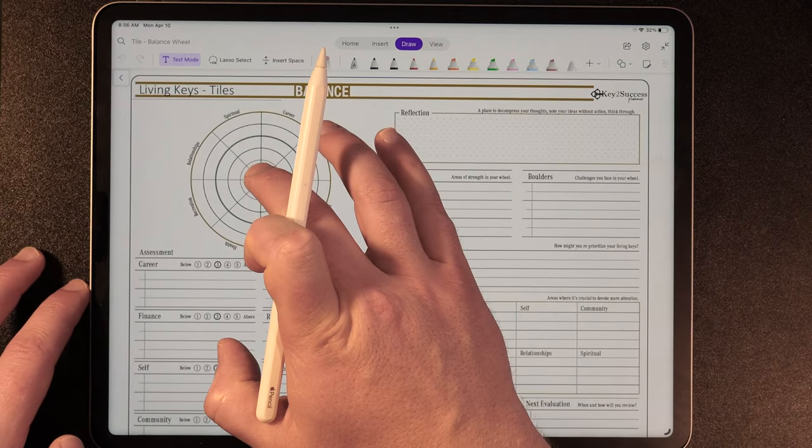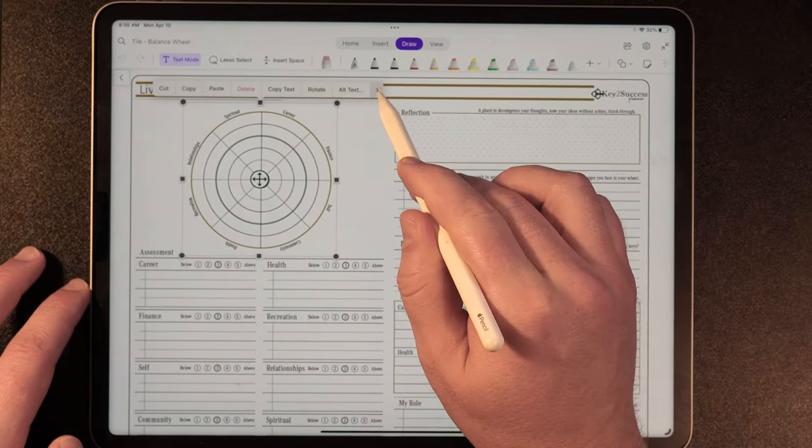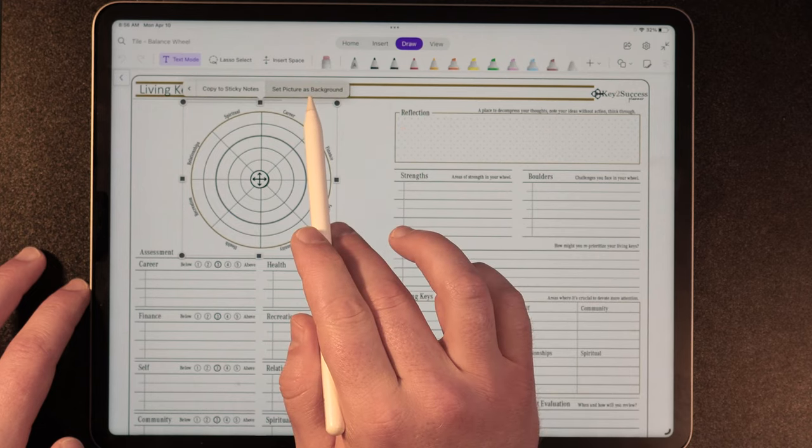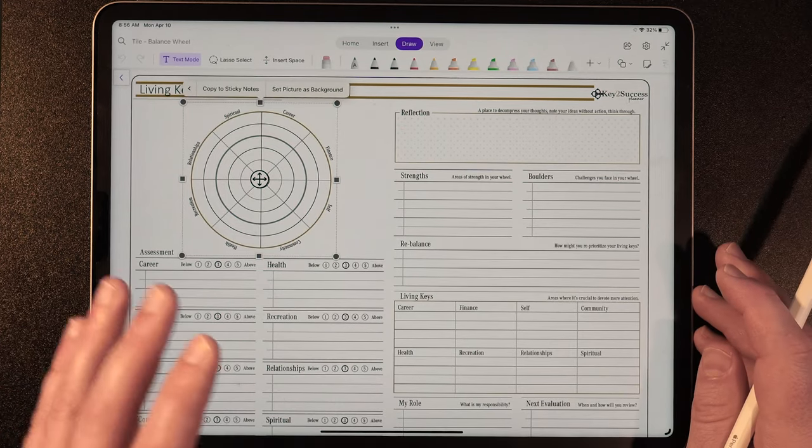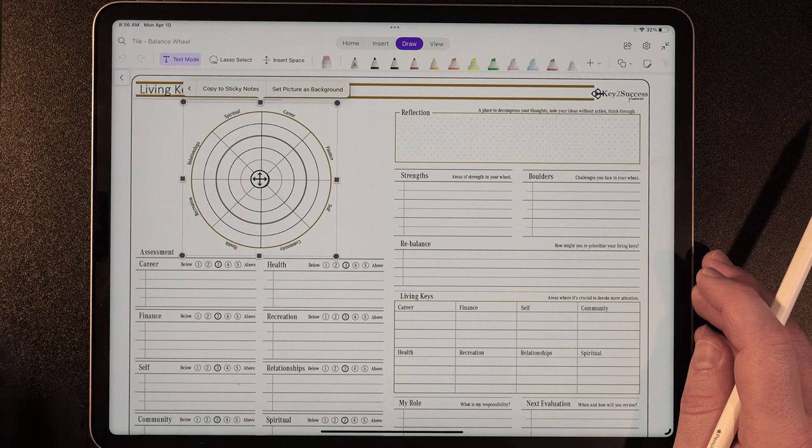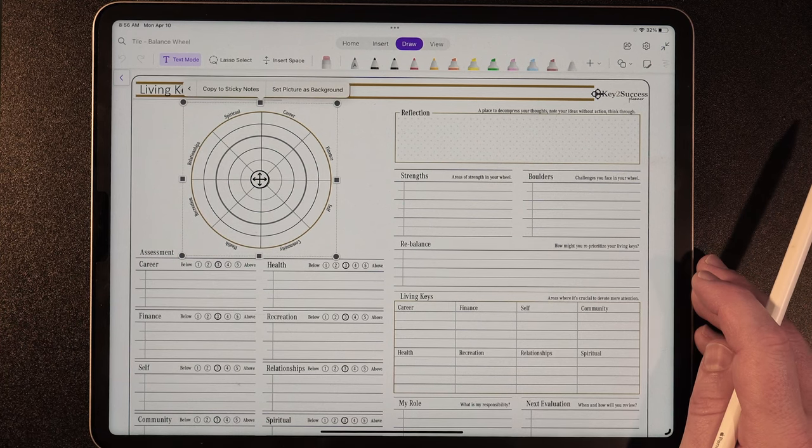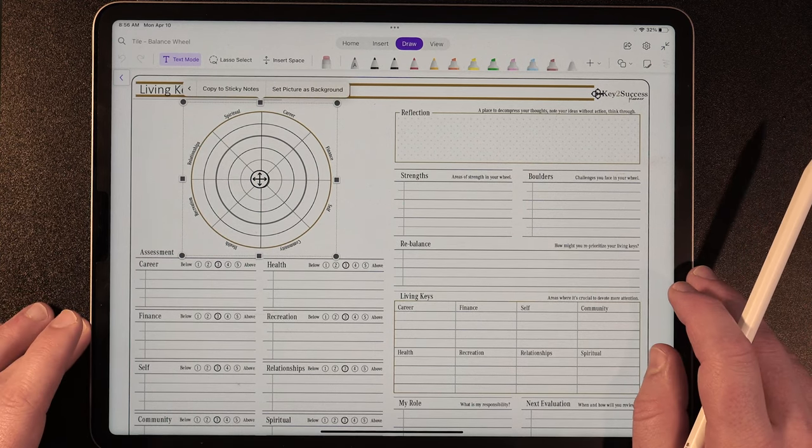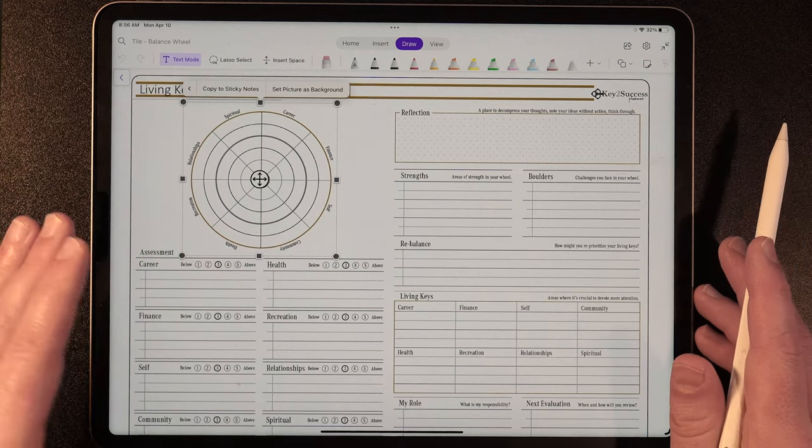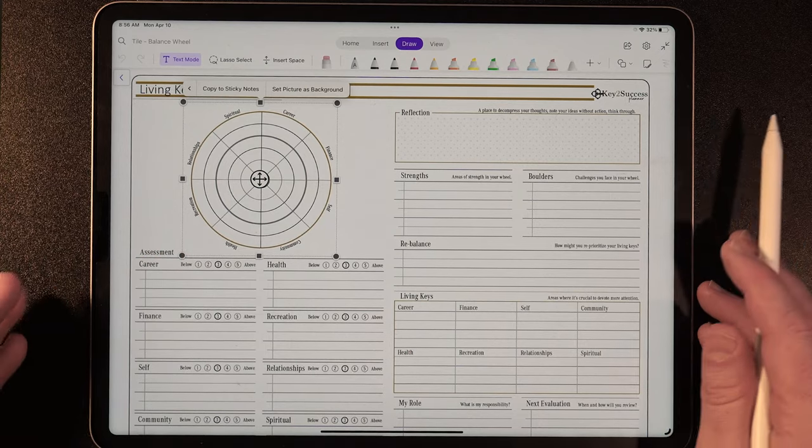And then from here, I'm going to go ahead and just organize these and move those into position. And once you go ahead and create your entire page, like we have done so already here, you're going to want to go ahead and tap on each one of the components and set image as background. As soon as you do that, you'll be able to write and type and place additional media over top of this balance board. I found people that integrate their vision board into this balance wheel to help give them ideas of what it is that they're looking to achieve and maintain balance throughout all aspects of your life.